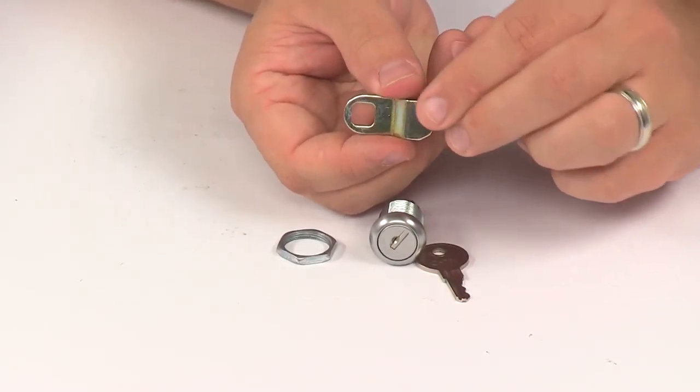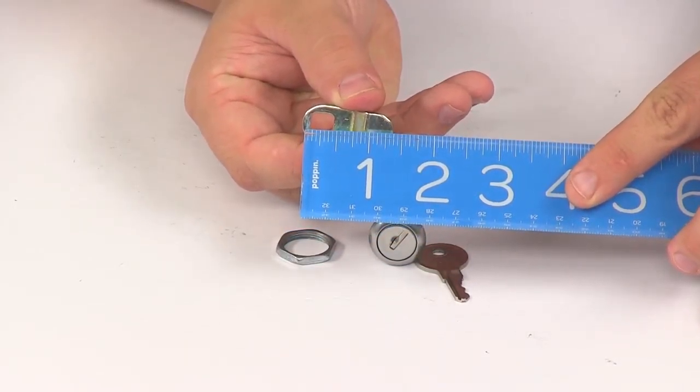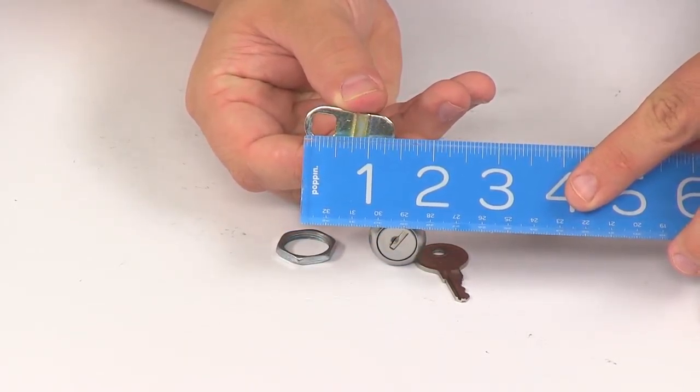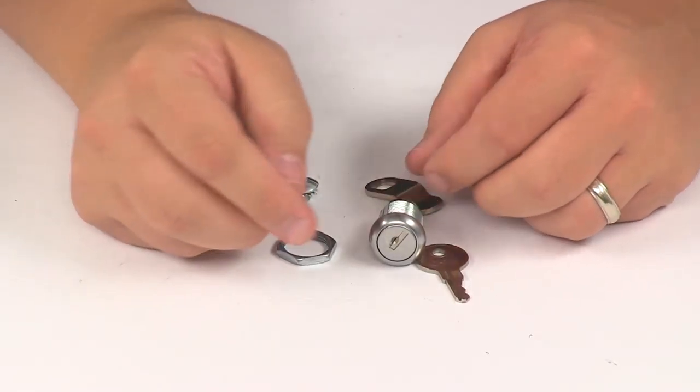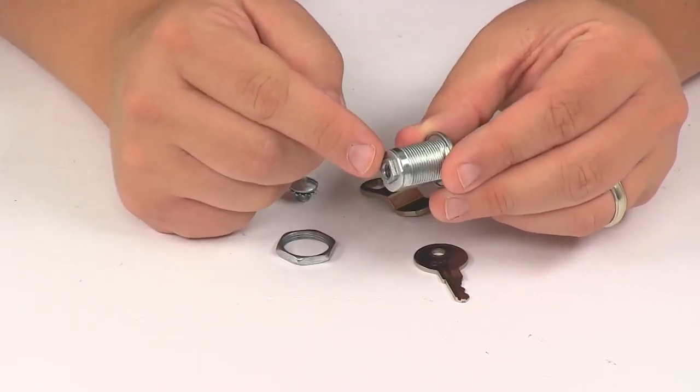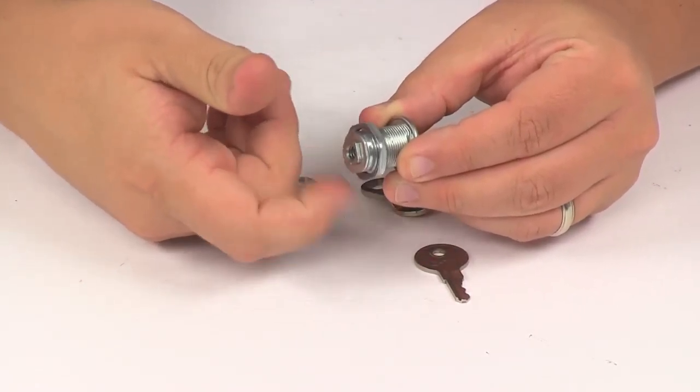On some of these replacement locks, the lever design changes. You can see the design here, but the overall length measuring edge to edge is about one and three-eighths of an inch.